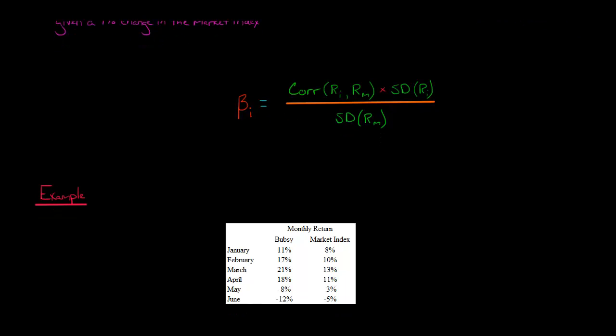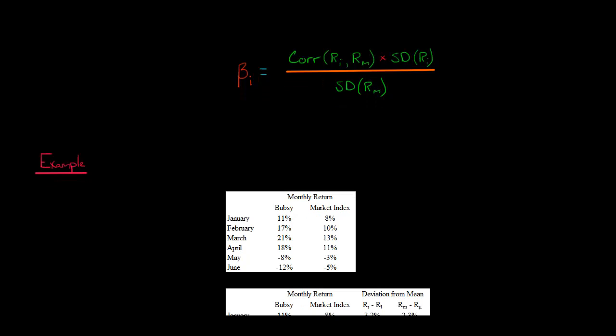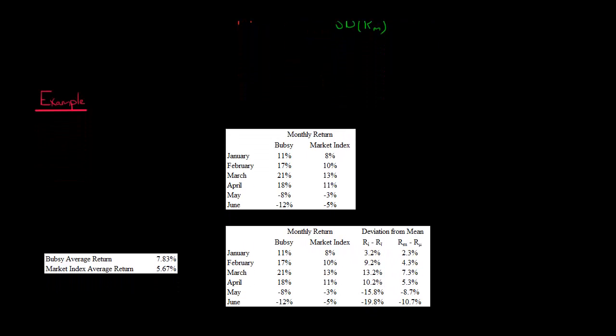Let's say we've got the monthly stock returns for the past six months. We've got six observations for a company called Bubsy — that's firm I — and then we've got a market index, could be the S&P 500. We've got returns: 11% for Bubsy in January, 17% in February, and so forth, plus the returns of the market index. We can calculate the average return for both: it's 7.83% for Bubsy and 5.67% for the market index, by adding all the returns and dividing by six.